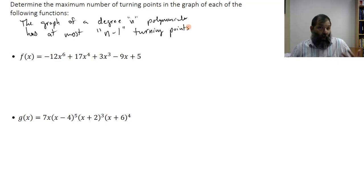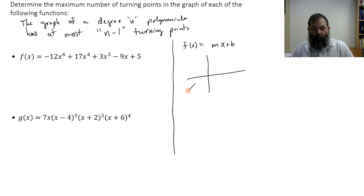We can understand this from a couple of basic functions. If we think of a linear function, the function y equals mx plus b, well, that's a line, and it has zero turning points. This is degree 1, zero turning points.